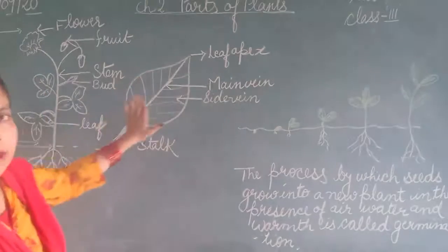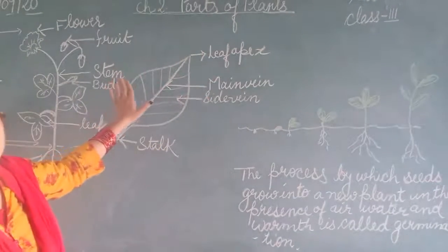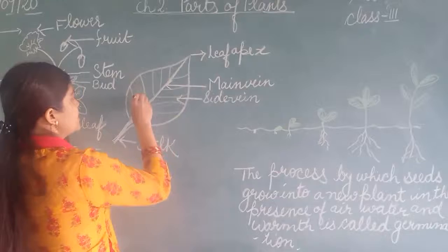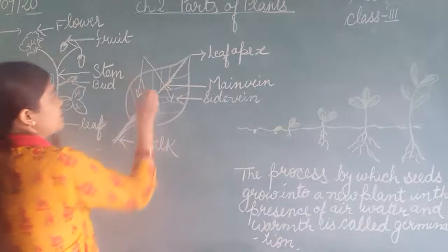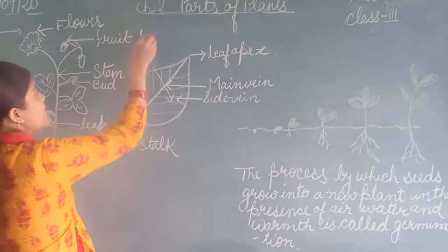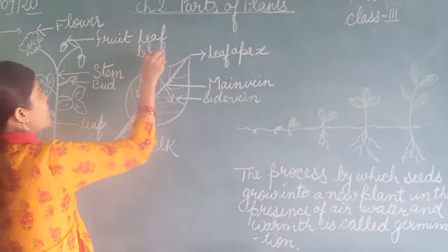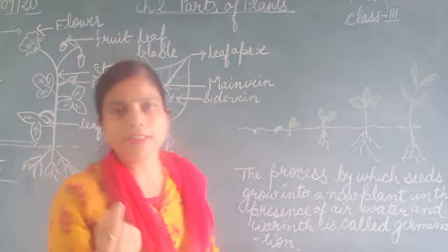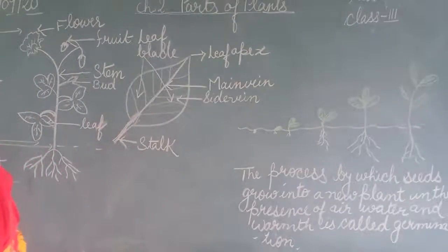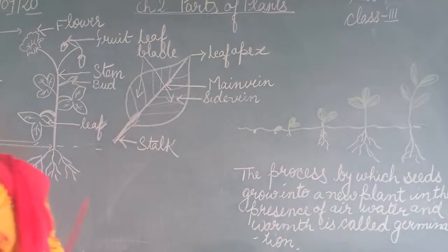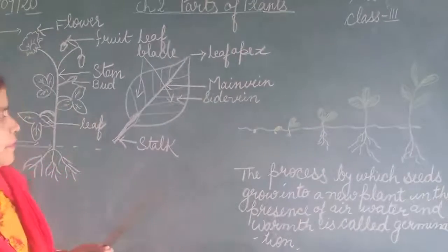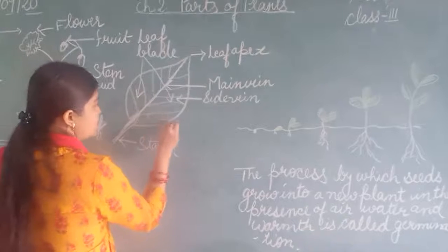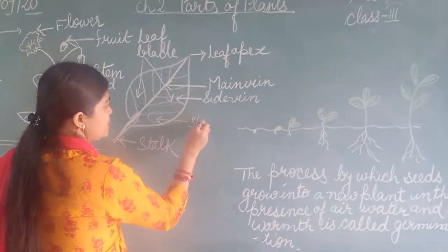The surface of the leaf is broad and flat. This surface of the leaf is known as the leaf blade or lamina. There are small tiny openings on the surface of the leaf through which the leaf exchanges gases. We can't even see those openings with our eye; we have to use some instrument. These openings are known as stomata.